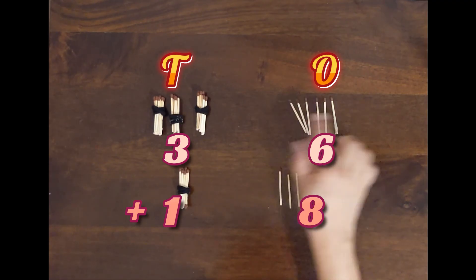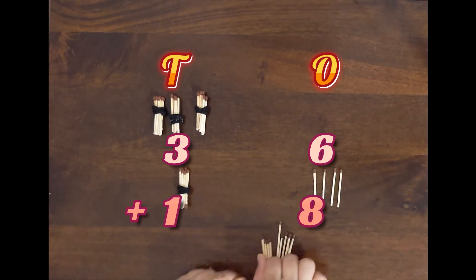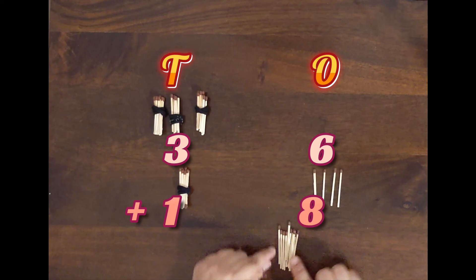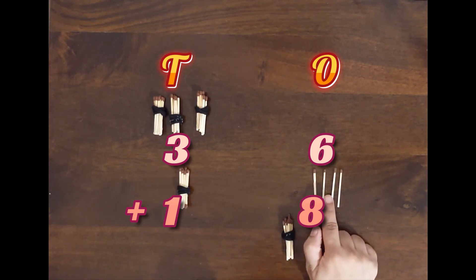So here we have 36 plus 18. Now here we have to add 6 plus 8. To make our addition more easy, let's make groups of ten. Three, four, five, six, seven, eight, nine, ten. So we will make a bundle of these ten sticks.